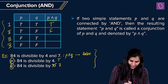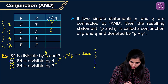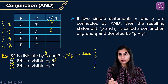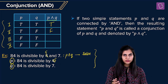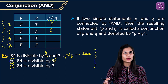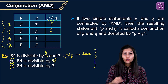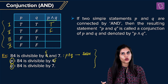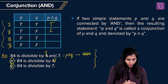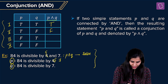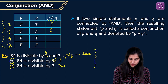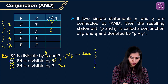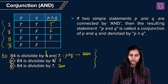Now, let's say in place of 4 we put 5: '84 is divisible by 5 and 7.' It is divisible by 7, but not by 5. So the complete compound statement has truth value: false. For individual statements: '84 is divisible by 5' is false, and '84 is divisible by 7' is true. The inference: when P is false and Q is true, P ∧ Q comes out to be false.